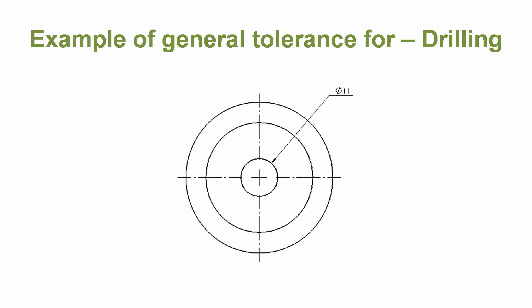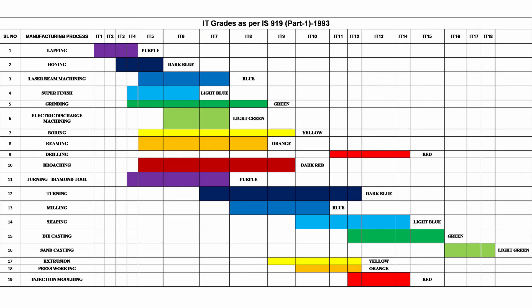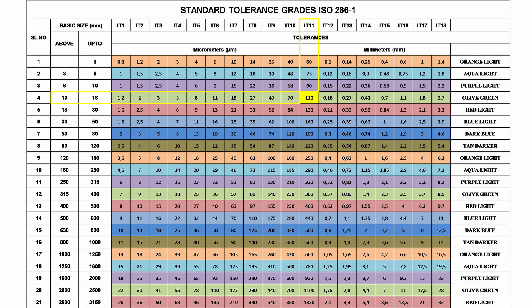Example of general tolerance for drilling. Given a part for the drilling process, the IT grade is serial number 9, shown in red color. Here we require a fine manufacturing process, which is IT11. Dimension 11 is the basic size, which falls between 10 to 18 mm. The IT grade is IT11. From the chart, the tolerance value is 110 microns, which is 0.11 mm. Divided by 2, that is 0.055 mm tolerance per side.